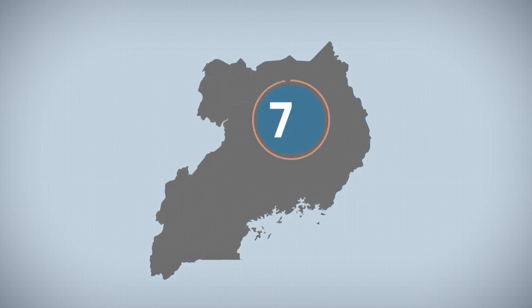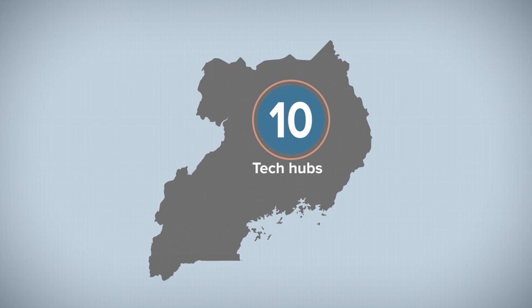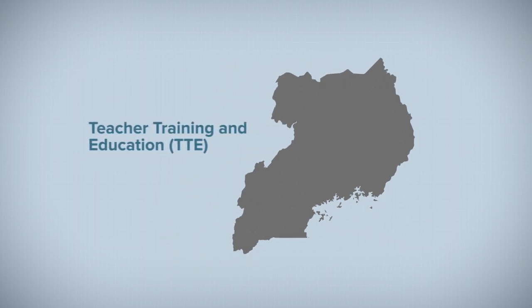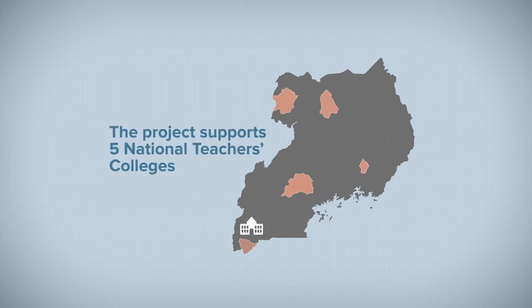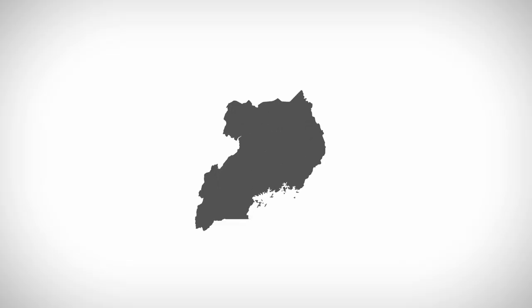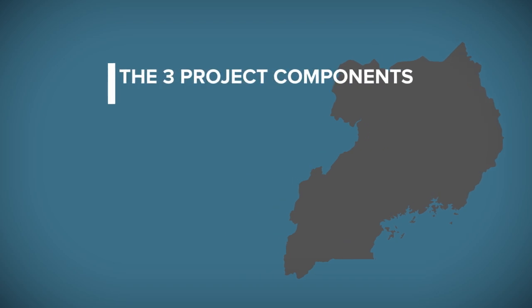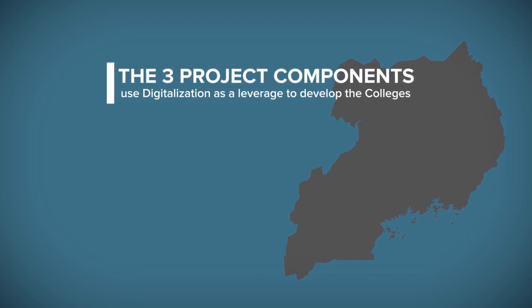Uganda has a digital ecosystem of 10 tech hubs. The Teacher Training Education project is implemented by Enabel and the Ugandan Ministry of Education and Sports. This project supports five national teachers colleges in training competent secondary school teachers. The TTE project considers digitalization as a catalyst for the development of the colleges, and its three project components use digitalization as a leverage to develop the colleges.